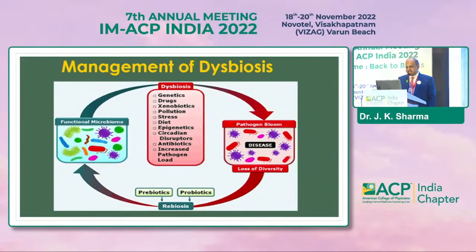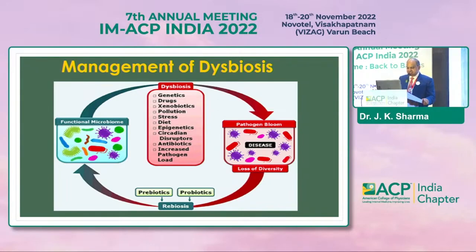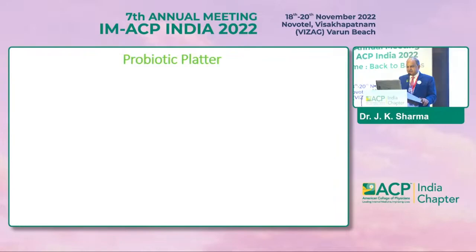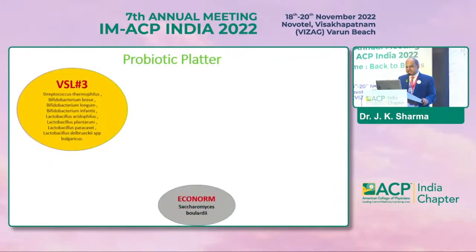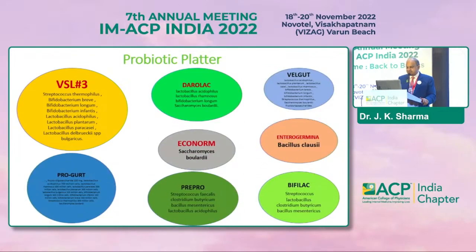To manage dysbiosis, factors include genetics, drugs, xenobiotics, pollution, stress, epigenetics, circadian disruptors, antibiotics, and increased pathogen load. A dysfunctional microbiome through dysbiosis leads to pathogen bloom, loss of diversity, disease, and re-dysbiosis. Prebiotics and probiotics play a role in managing dysbiosis. For factors we cannot change — like genetics — we must identify and treat the changeable ones. Regarding probiotic prescriptions such as BSL-3, Econorm, Enterogermina, Darolac, Velgut, Bifilac, Prepro, and Procurt — we should not simply prescribe what is commercially available, but determine what exactly our patient needs and in which combination it is available.